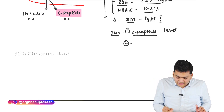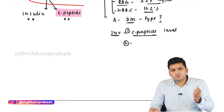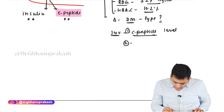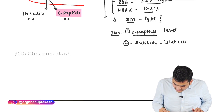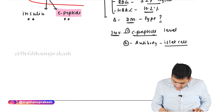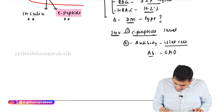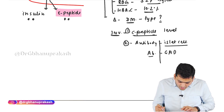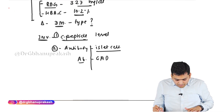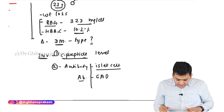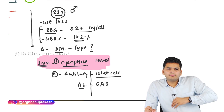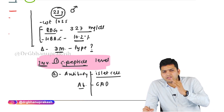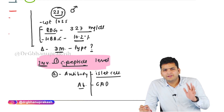Additionally, since type 1 diabetes is an autoimmune disorder, we can also check for antibodies such as islet cell antibodies and GAD antibodies. But the key point is: to diagnose type 1 diabetes, measure C-peptide levels. If C-peptide is low, it confirms the beta cells are not firing and are being destroyed — consistent with type 1 diabetes.